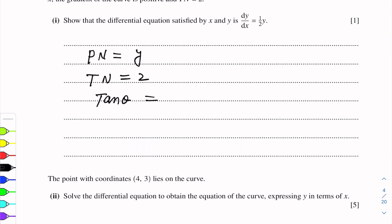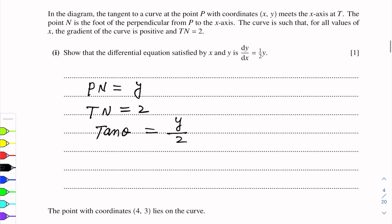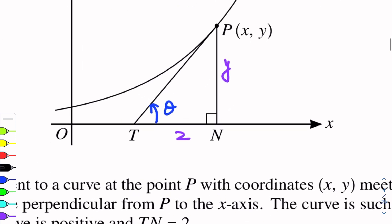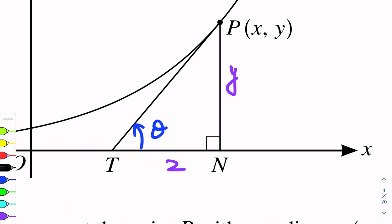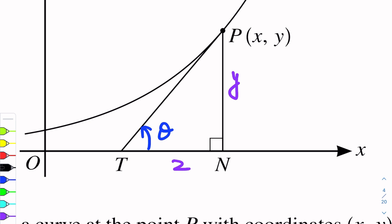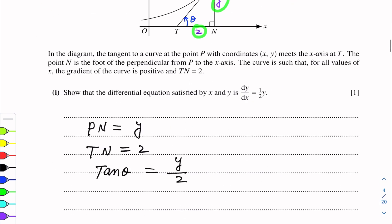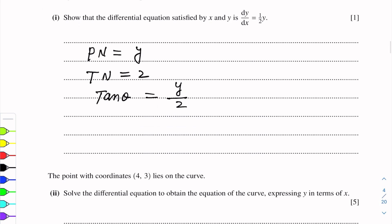Tan(theta) will be y over 2. Now, the gradient is dy/dx. We have found the gradient, which is y over 2. So the gradient is y over 2, and this is also equal to dy/dx.